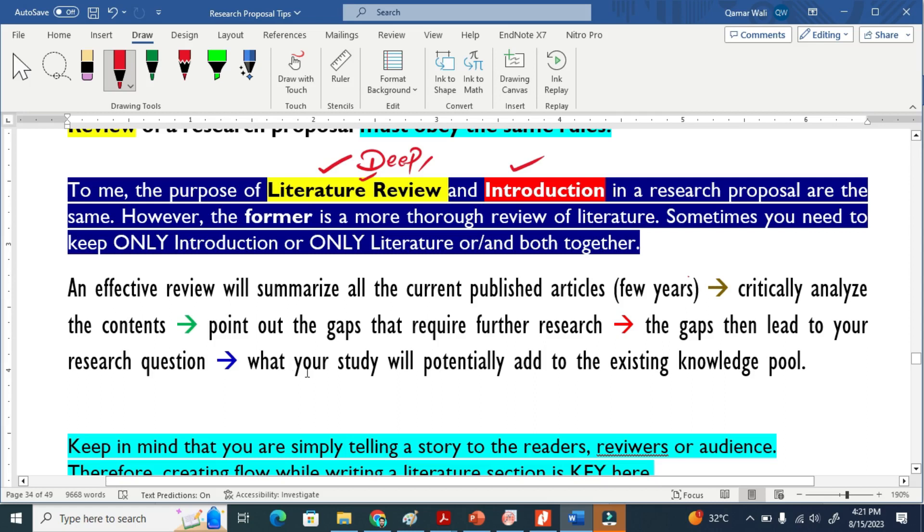Let me quickly give you the overview of what we have to write in the literature review. An effective review basically summarizes all the current published articles. For example, if you are working in a specific topic like robotics, you have to summarize all research articles published on robotics or their specific topic for a few years.